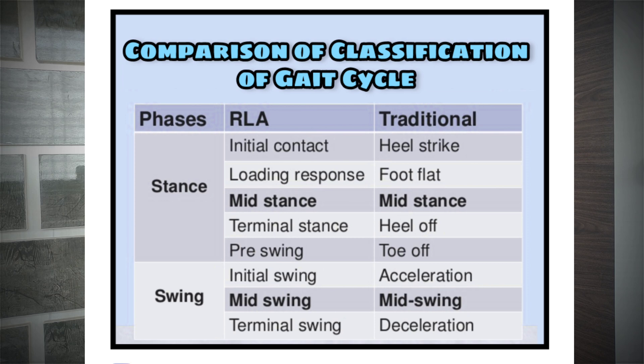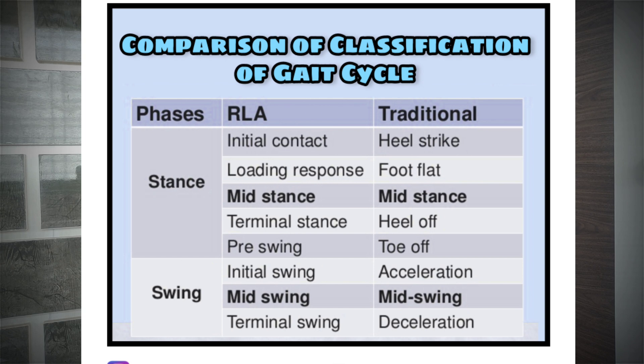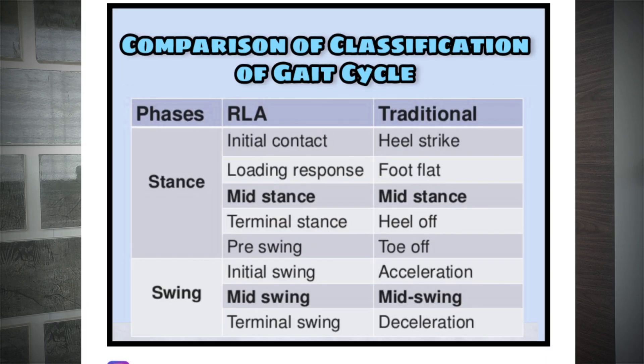I am sharing an image showing different classifications of the gait cycle. In the Rancho Los Amigos (RLA) classification, the stance phase is divided into: initial contact, loading response, mid stance, terminal stance, and pre-swing; and the swing phase is divided into: initial swing, mid swing, and terminal swing. In the traditional classification, the stance phase is divided into: heel strike, foot flat, mid stance, heel off, and toe off; and the swing phase is divided into acceleration, mid swing, and deceleration — remembered as early swing, mid swing, and late swing.